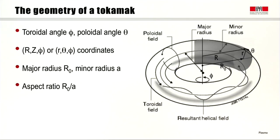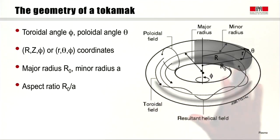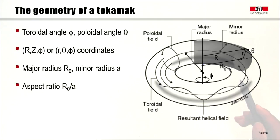Let's explain in more detail the geometry of a tokamak using this drawing. A tokamak is essentially a cylinder with its ends folded together. So we have two angles: the first is the toroidal angle phi that goes in the plane of the cylinder, and then we have the poloidal angle theta that describes the plane perpendicular to the toroidal angle phi.